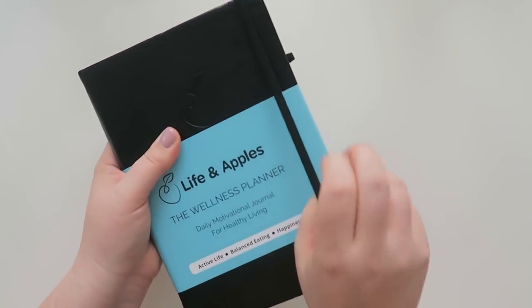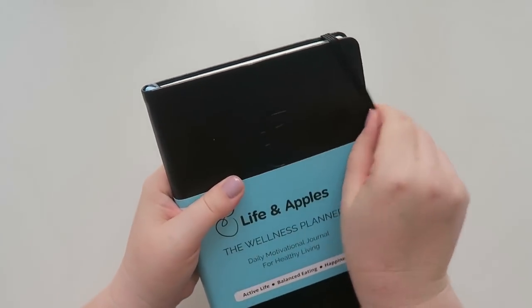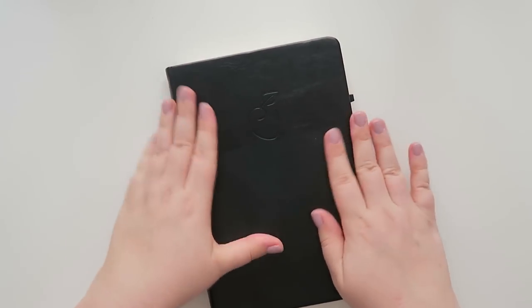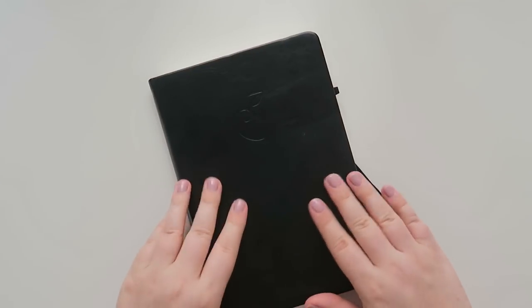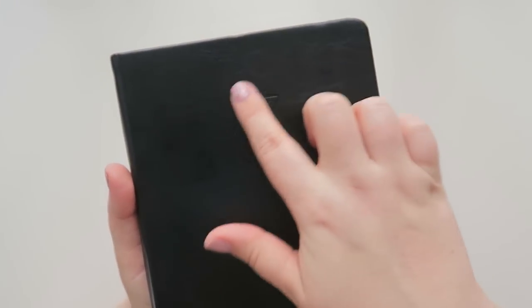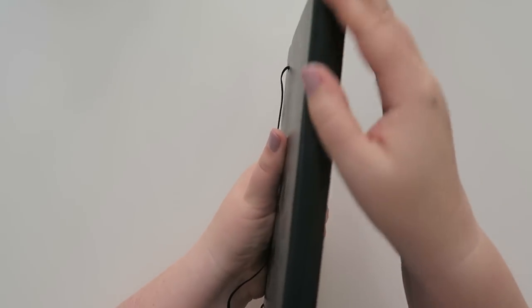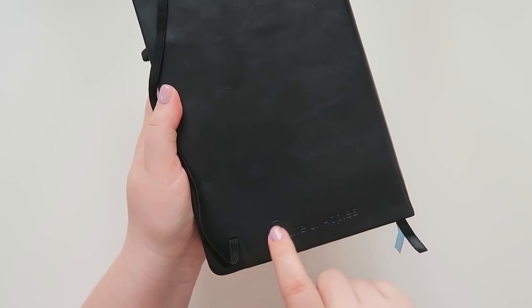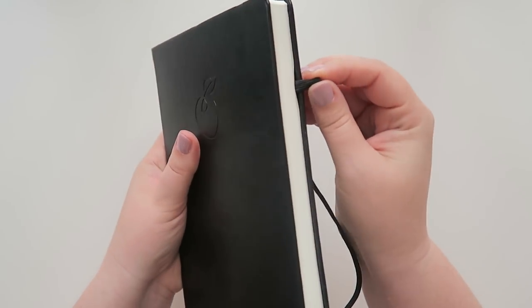First things first, there is this elastic band closure, which I do like for these kind of more like softer planners. And let's pull this guy off here. All right, here we go. Let's take it off. Oh, it's naked now. So anyway, on the front, it is like a nice kind of faux leather. And it's going to be kind of hard to see, but maybe you can see it. But there is like a little embossed apple on the front. The spine is just like a softer leather as well. And then the back is just plain, but embossed on the bottom. It says life and apples with a little apple on that as well. There is a little pen loop, which is really nice.